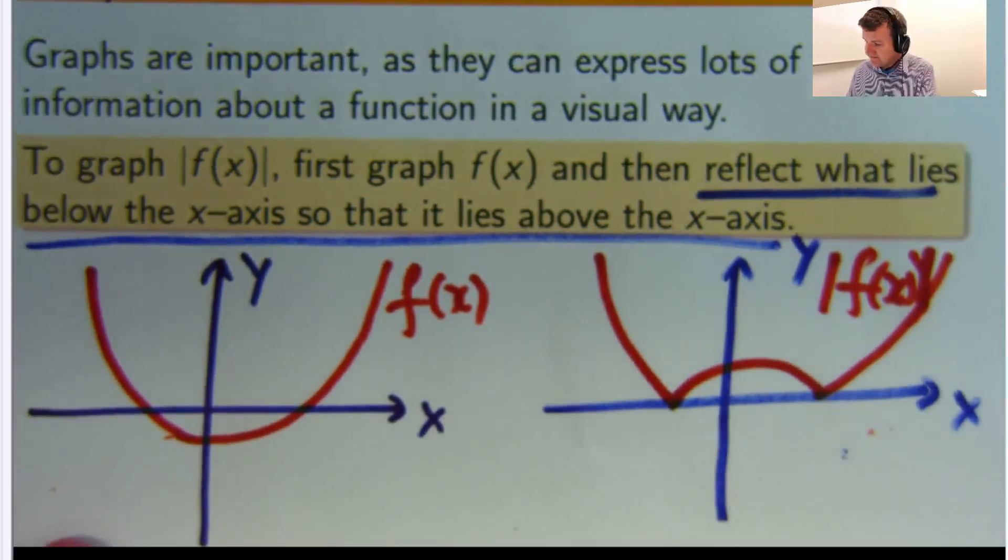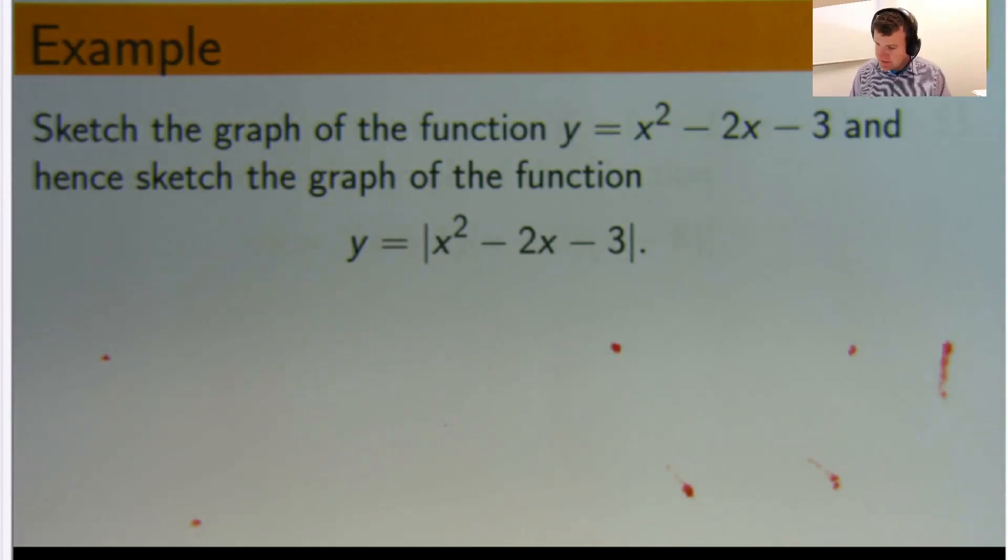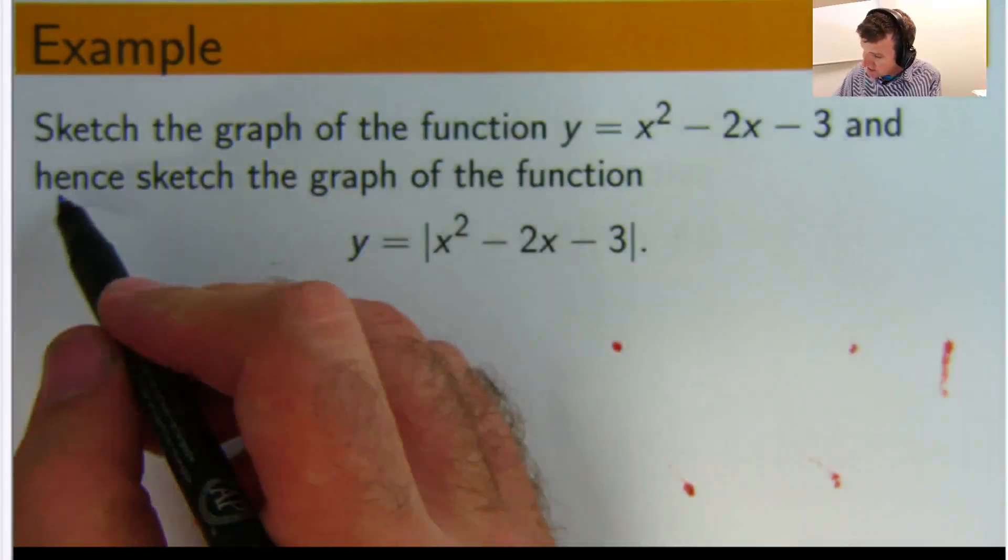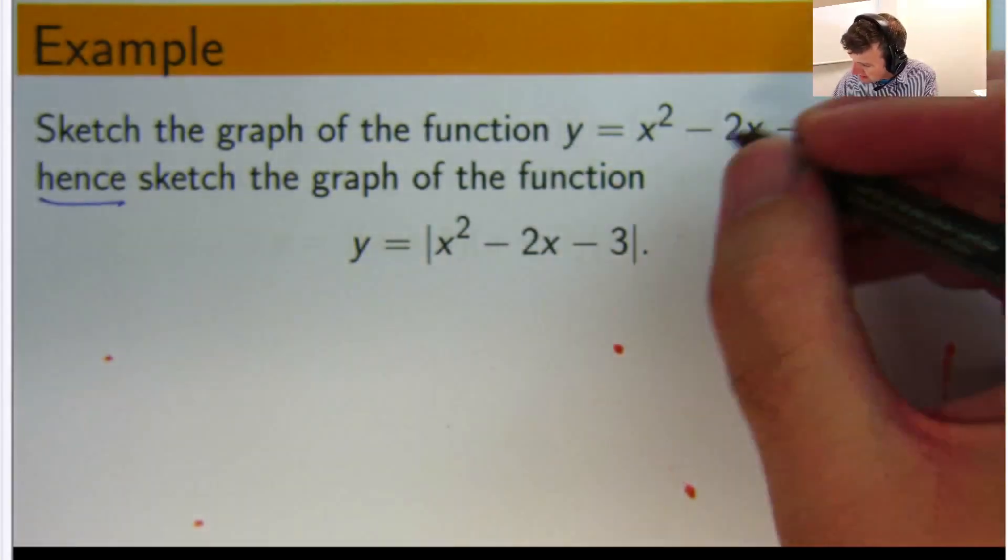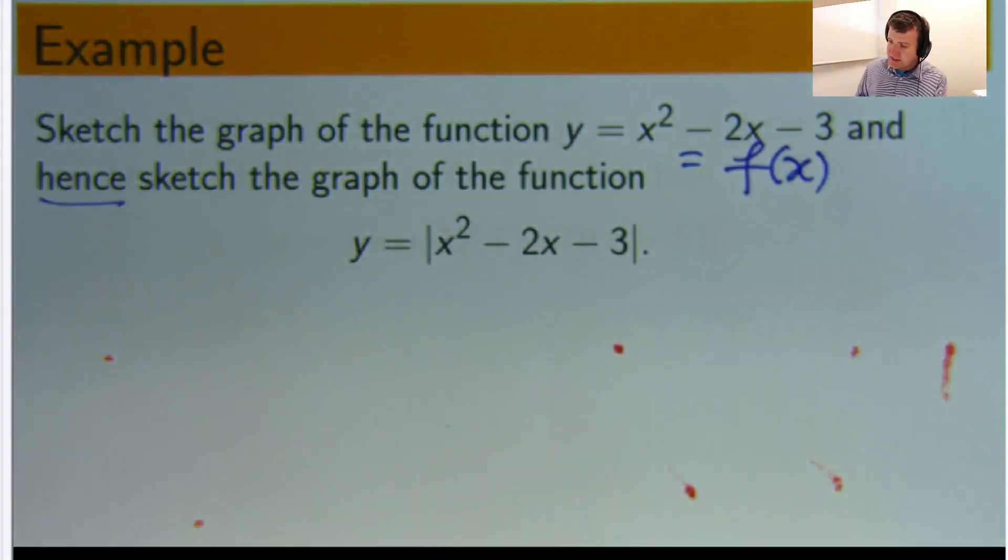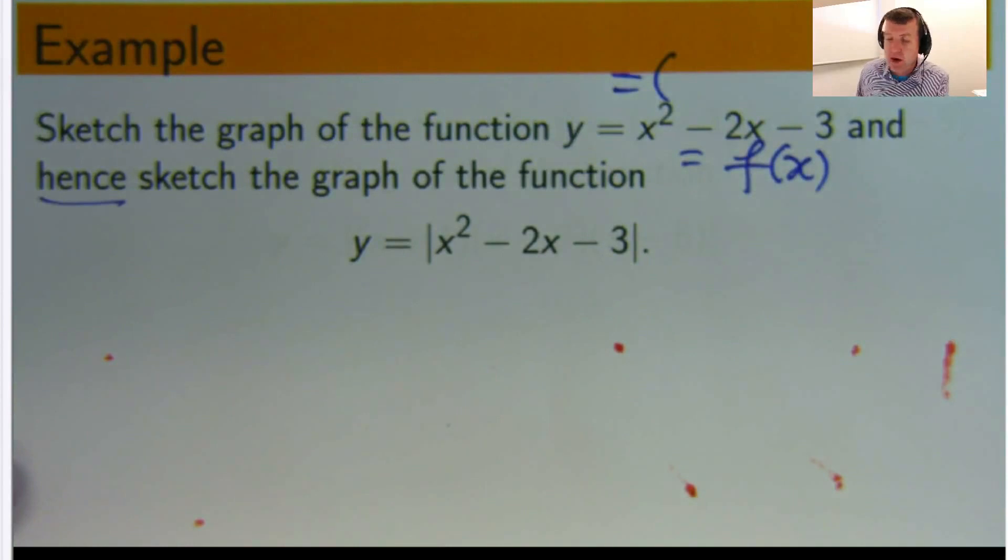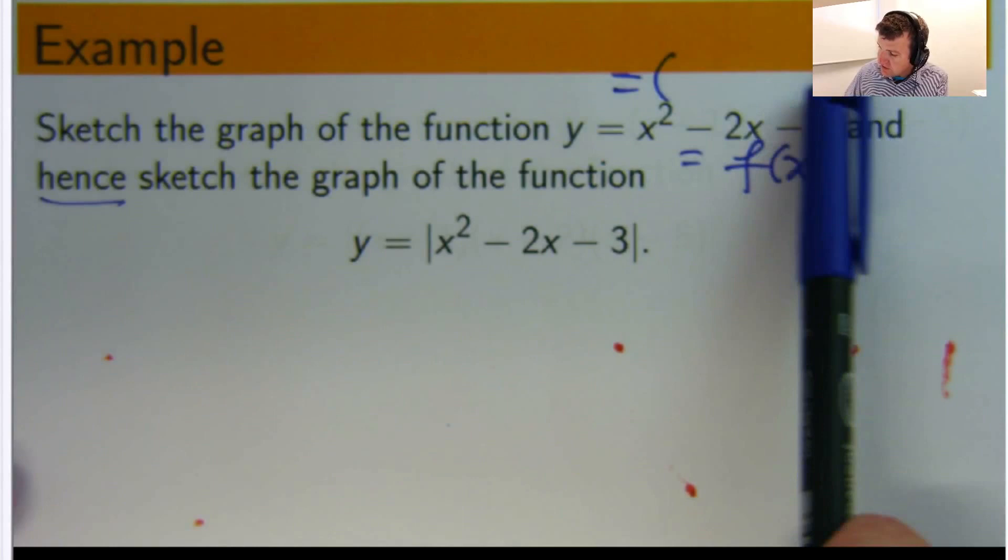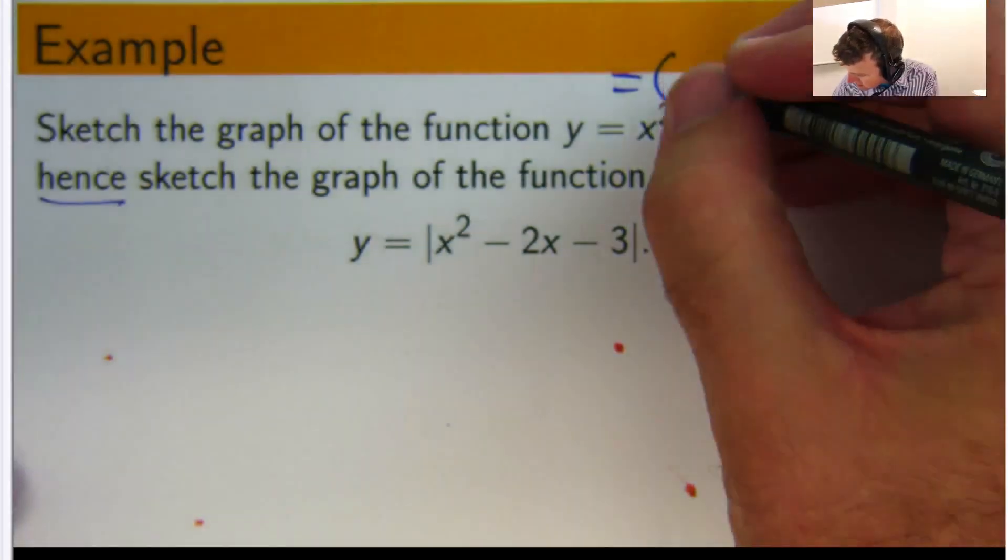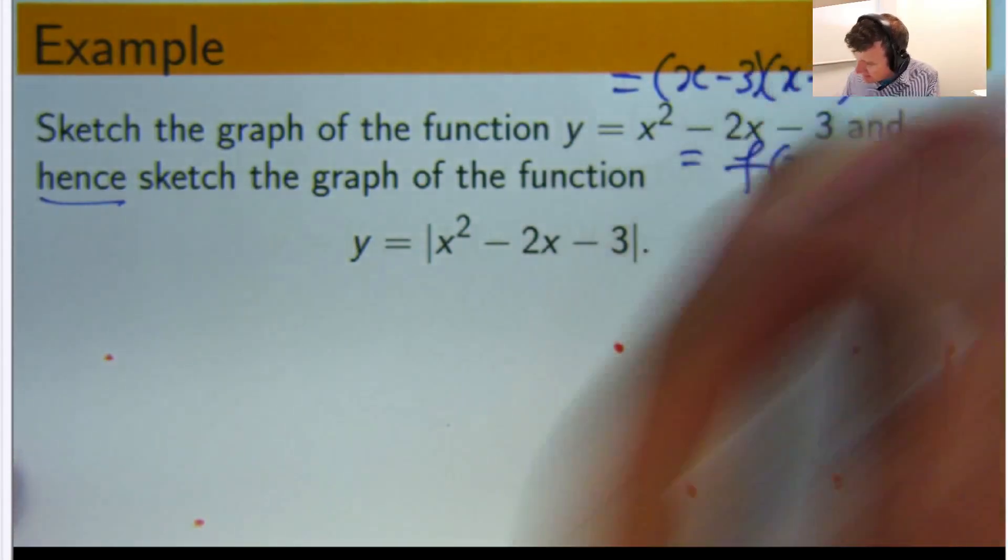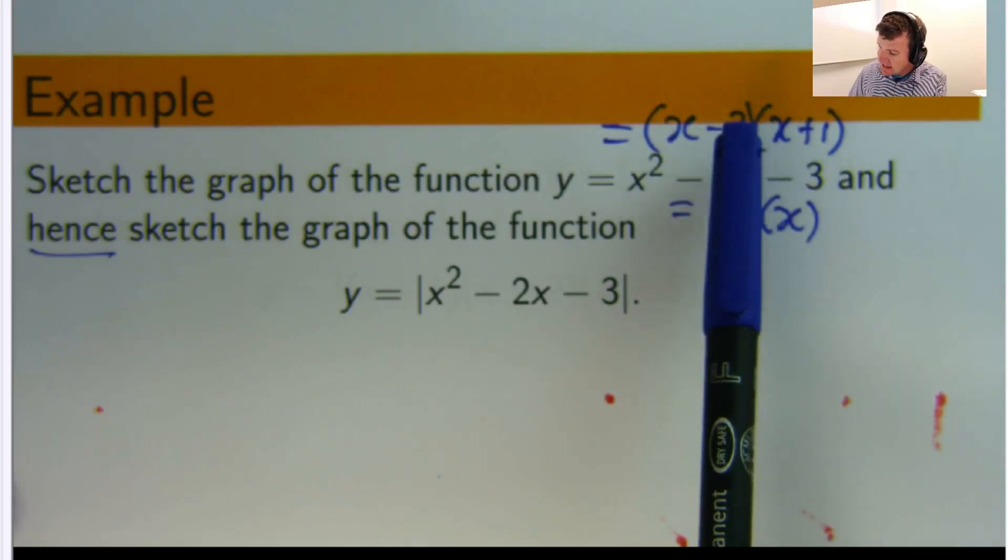Let's do an example. Sketch the graph of this function, and hence use the information to graph this function. Let's call this f of x. To sketch it, I'm going to factorize that quadratic, x squared minus 2x minus 3. We want two numbers that multiply to give negative 3 and add to give negative 2. So it'll be negative 3 and positive 1. You can factor it like this.